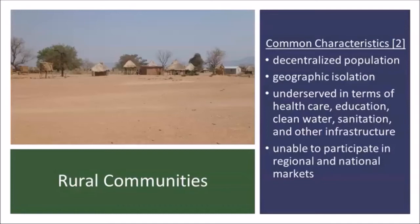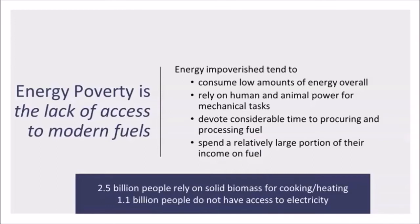Today's topic is definitely rooted in rural communities. There's no strict definition of what a rural community is, but these are the typical characteristics: they generally have a decentralized population, they're geographically isolated, and they tend to be underserved — not only in terms of access to energy, but also health care, education, clean water, sanitation, and other services. In addition, they're usually unable to participate in more regional or even national markets, so in a real sense there's some isolation there.